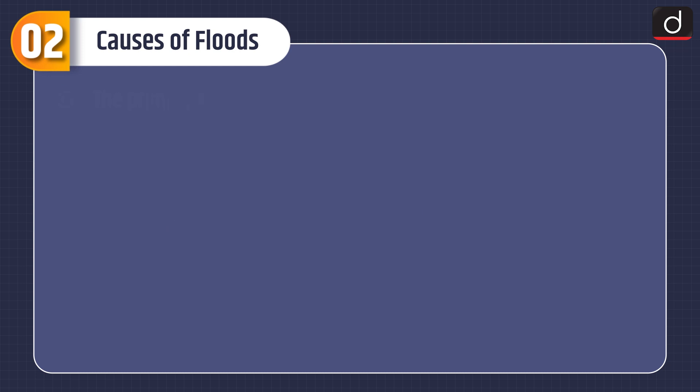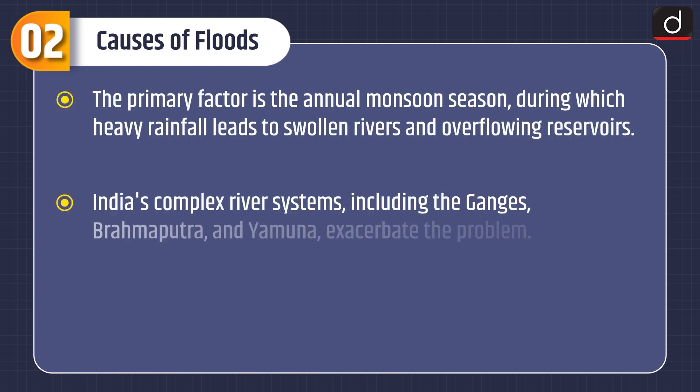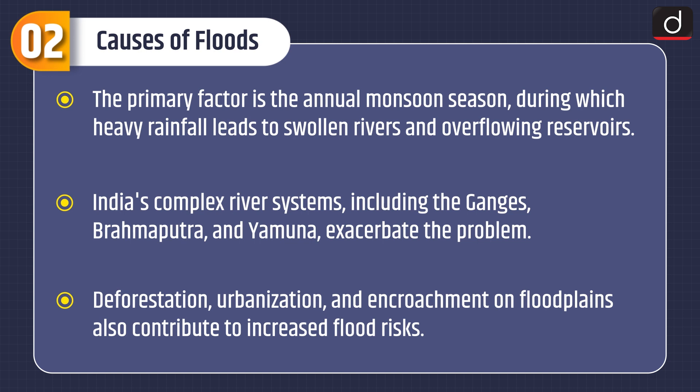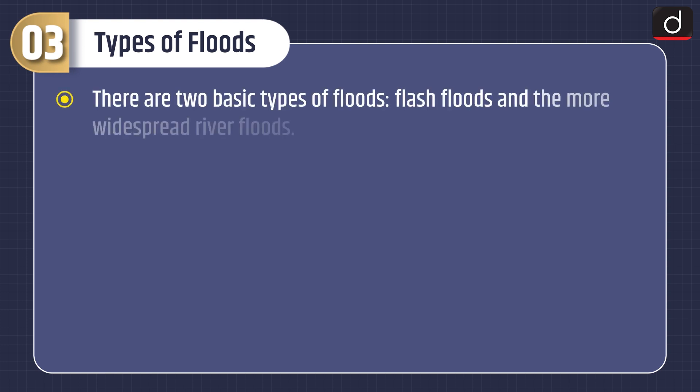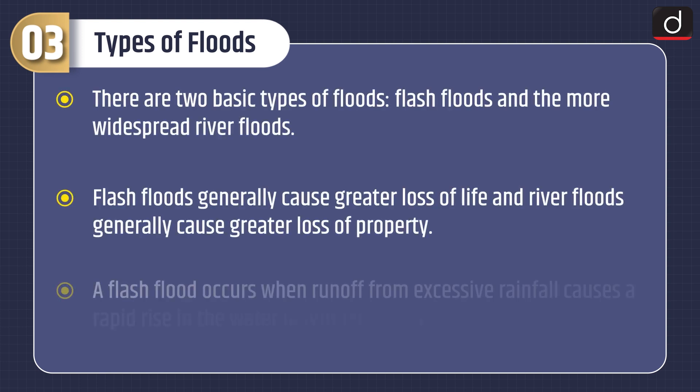The primary factor in India is the annual monsoon season, during which heavy rainfall leads to swollen rivers and overflowing reservoirs. India's complex river systems, including the Ganges, Brahmaputra, and Yamuna, exacerbate the problem. Deforestation, urbanization, and encroachment on flood plains also contribute, and climate change is intensifying the frequency and severity of floods.